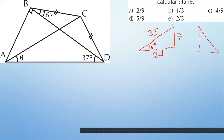El más conocido es el 5, 4, 3. Siempre me confundo entre 37 y 53: ¿quién le corresponde el 3 o el 4? Fácil: ¿quién es el mayor? 53. Entonces le corresponde el mayor. La hipotenusa es 5. ¿Quién queda? 4 y 3. Al mayor le corresponde el mayor y al menor le corresponde el menor. 37 es el menor, entonces le corresponde 3; a 53 le corresponde 4. 90 es el mayor y le corresponde 5.